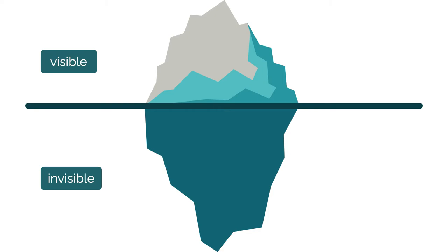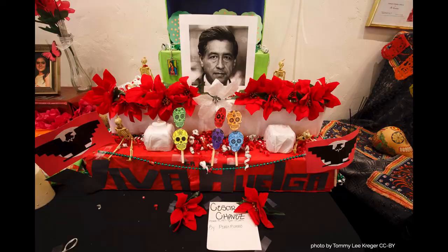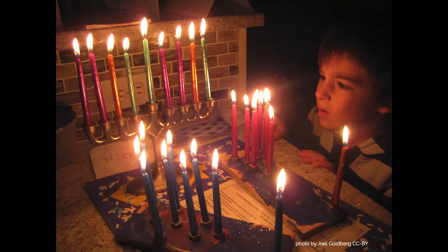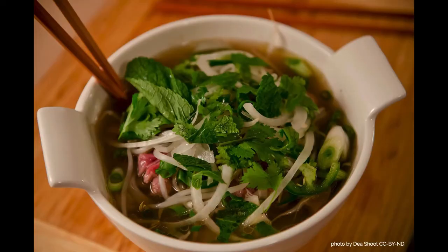The visible aspects of culture include things like the clothing we wear, our traditions and rituals, and the food we eat.